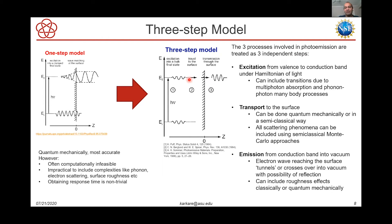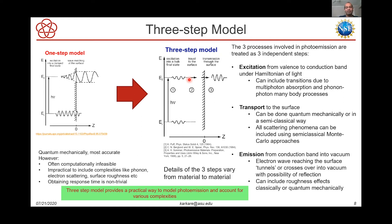In the emission step you can also include effects of surface roughness, treated classically or quantum mechanically. The three-step model of photoemission is much more versatile and can be used for a much broader range of materials. The details of what scattering or excitation processes you include really depends on the material being modeled, so the details vary a lot from material to material. But in general the three-step model provides a nice framework to model the photoemission process and account for the various complexities that occur during photoemission.